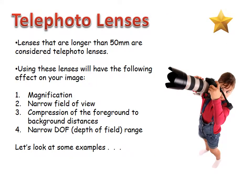Telephoto lenses are longer than 50mm, and they have several effects on your image. First, there's magnification — things look bigger than with a normal lens. They also have a narrower field of view, so you see less of the scene. They compress the foreground-to-background distance, and they produce a narrower or shallower depth of field. Let's look at some examples.